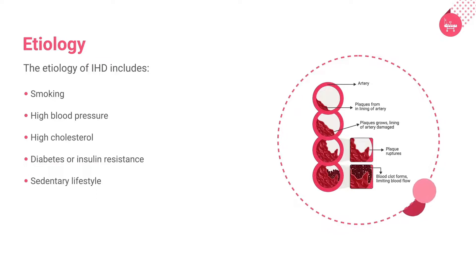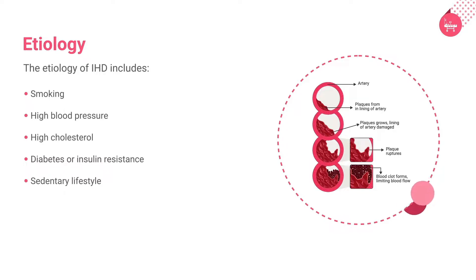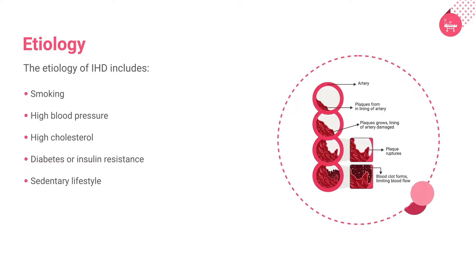High blood pressure can cause IHD, as the cardiac muscle doesn't receive enough blood supply. High cholesterol is a major contributor to the increased risk of atherosclerotic lesion formation in the blood vessels supplying the heart. Patients with diabetes often have unhealthy cholesterol levels, including high LDL cholesterol, low HDL cholesterol, and high triglycerides — a triad of poor lipid counts that often occurs in patients with premature coronary heart disease. A sedentary lifestyle is another major modifiable etiological factor for insulin resistance and cardiovascular disease.